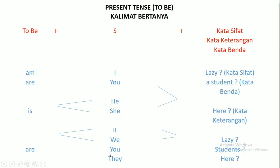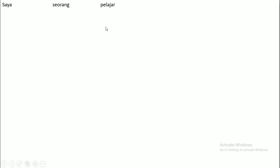Ya karena you, we, they ini kan banyak ya — untuk orang ketiga tunggal atau plural banyak. Jadi kalau untuk apakah mereka pelajar-pelajar: Are they students? Langsung kita contohkan ke percakapannya. Ya, these are all pelajar: I am a student. They are students.